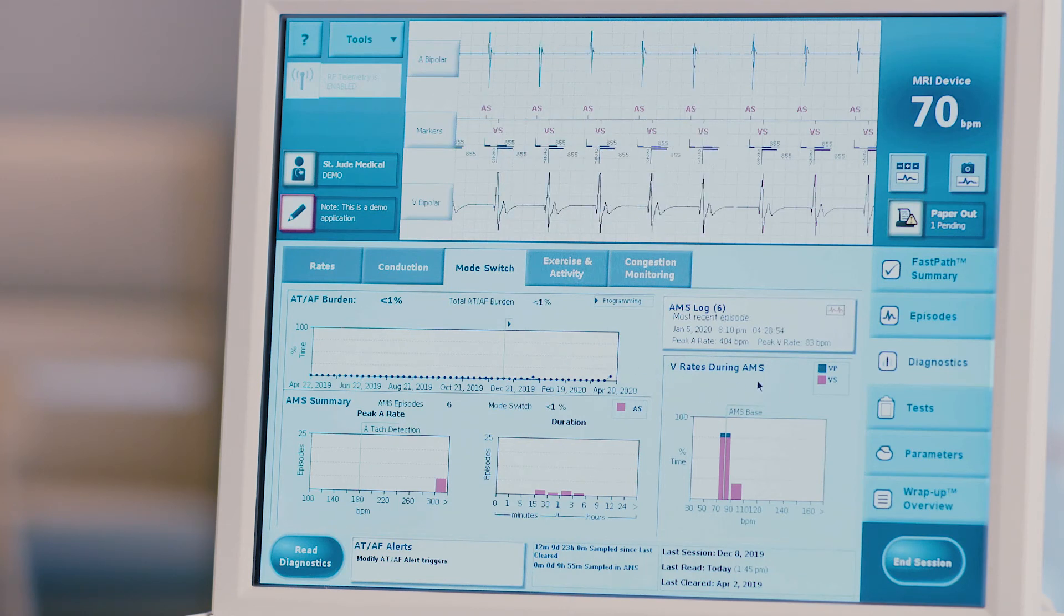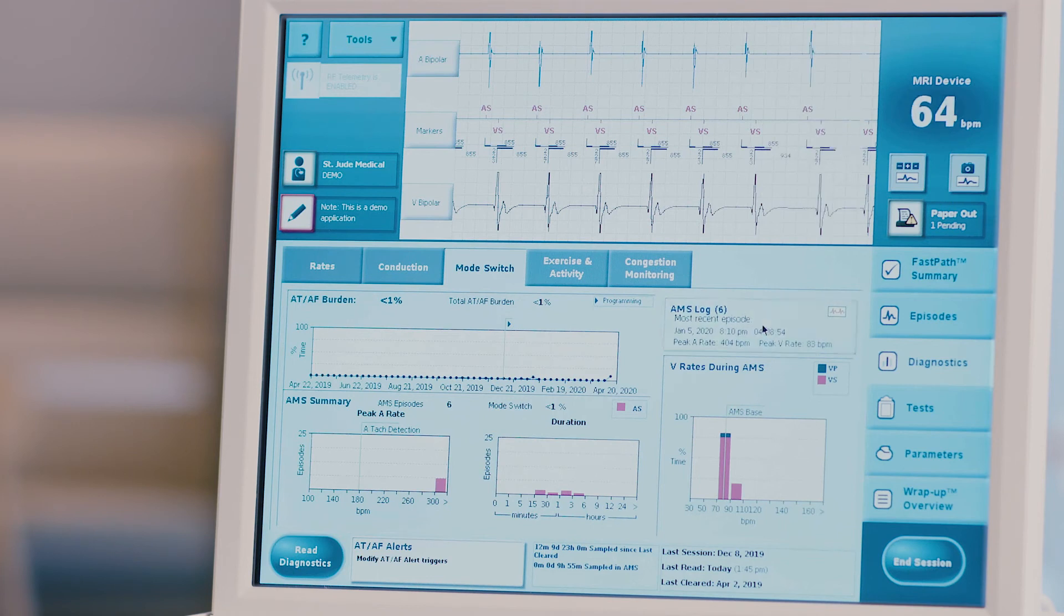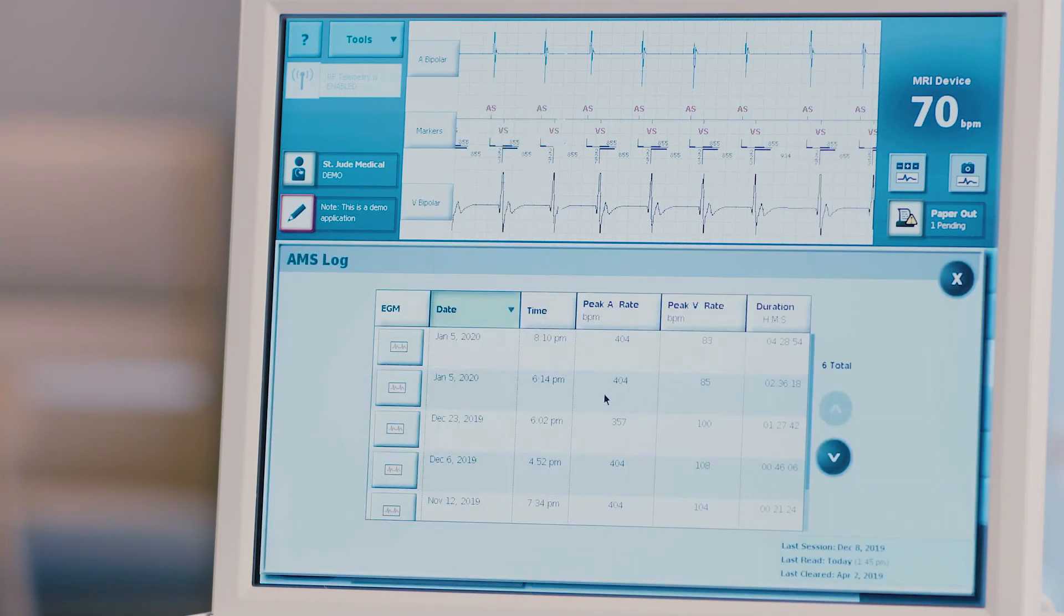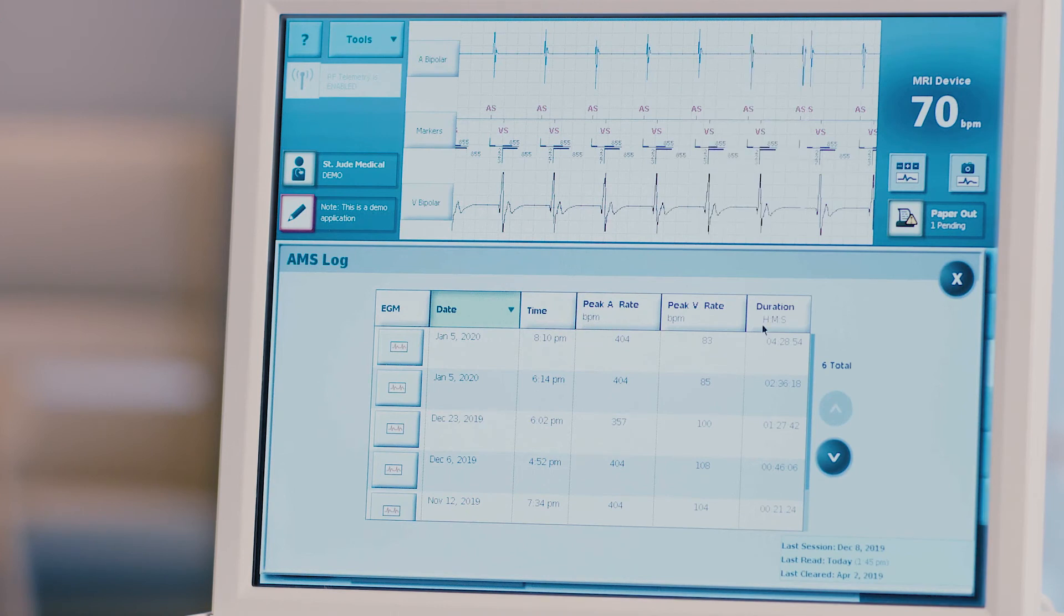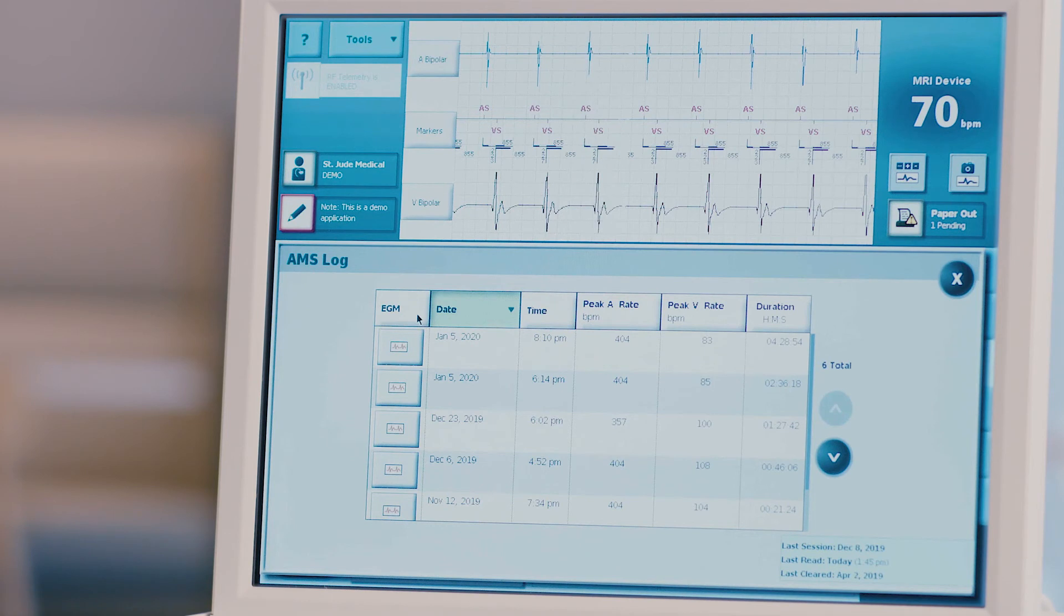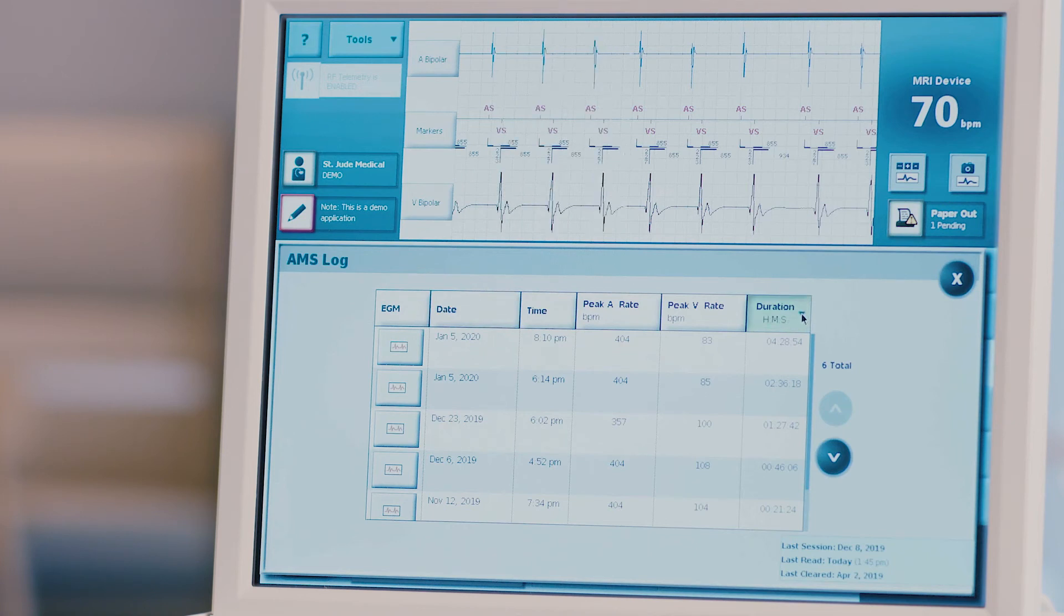The AMS log will list all mode switch episodes stored in the device. The log contains five columns: date, time, peak rate, duration, and EGM availability. To change the sort order of any of these columns, select the button at the top of the desired column. Sorting by duration is recommended to allow easy determination of the longest and shortest episode.